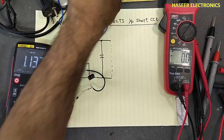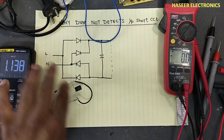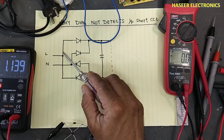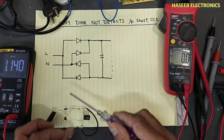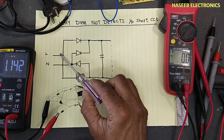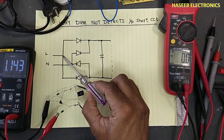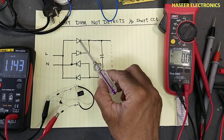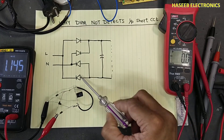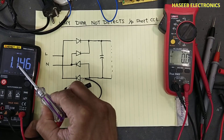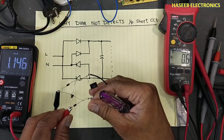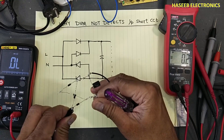1.1 volt — why? Because the test signal for diode mode is 3 volt. In any direction if you connect — positive lead here negative lead here, or negative here positive here — if I am connecting positive voltage here, this diode is forward biased and from the jumper: 0.6V here, 0.6V here, 0.6V here — 1.1 to 1.2 volt are dropped here. If I reverse the leads, the same result.